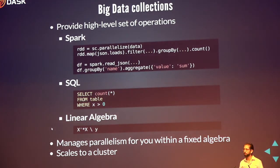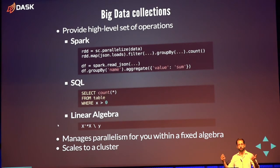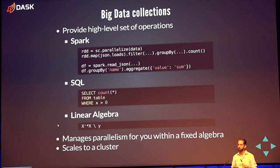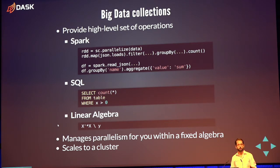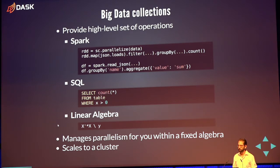Another set of parallel programming solutions I call big data collections or high-level collections. These give you a paradigm — some set of operations. In Spark, you get map, group by, join, filter — and using these operations you redefine your program. As long as you stay within that set, Spark handles all the parallelism, scales nicely onto a cluster. There are other domains — linear algebra with matrix multiply, transpose, reductions — and SQL. If you can stay within one of these paradigms, your problem is already solved by a well-maintained system.